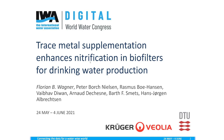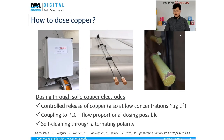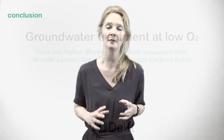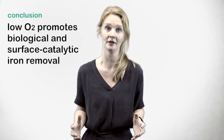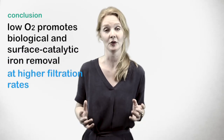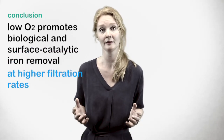With greenhouse gas emissions taking centre stage in so many discussions on net zero targets, dosing from solid copper electrodes enables dosing at a very low range and flow proportionate to the water to be treated. Low oxygen conditions promote biological and surface catalytic iron oxidation and removal in filters, which means that filters can be operated at higher filtration rates.